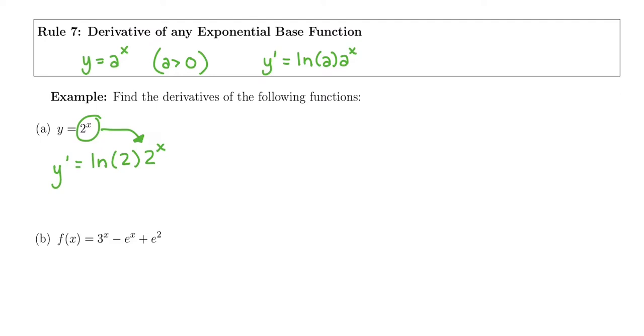Their derivatives have the question and the answer. So derivative of 2 to the x is not just 2 to the x. It's ln of 2 times 2 to the x. Similarly, we can combine some other rules.